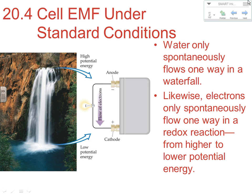A similar idea to what we're looking at with electron flow is to think about what's happening with water and its potential energy. Water falls because gravity pulls it downward, moving from an area of higher potential energy to lower potential energy. So water is only going to spontaneously flow one way — from higher to lower potential energy. Likewise, electrons are only going to flow in one direction spontaneously, when moving from an area of higher potential energy to lower potential energy in a redox reaction. Not all redox reactions are going to be spontaneous.